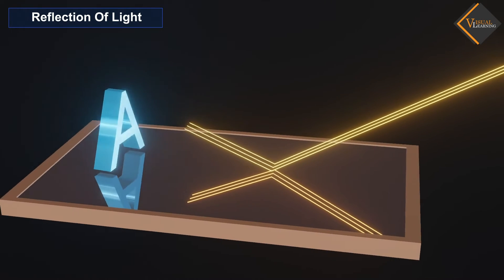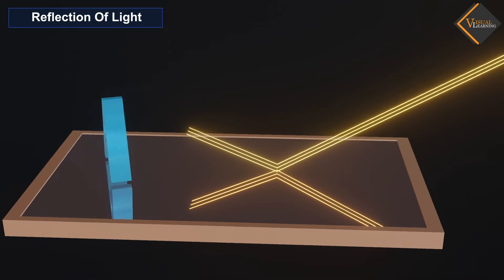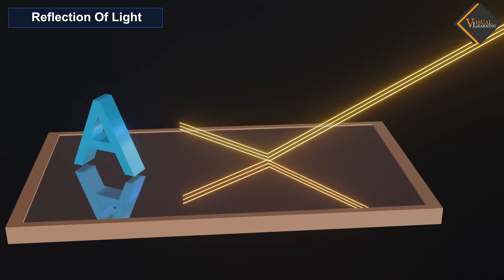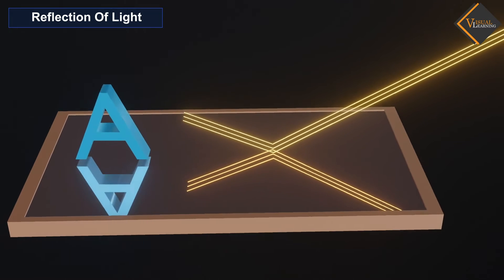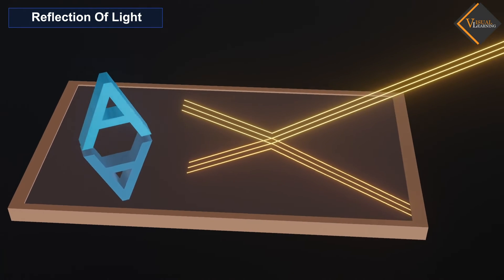It is due to the reflection of light that we are able to see ourselves in a plane mirror. This phenomenon gives us a basis on which to view the environment.